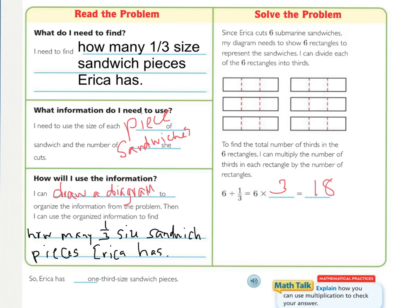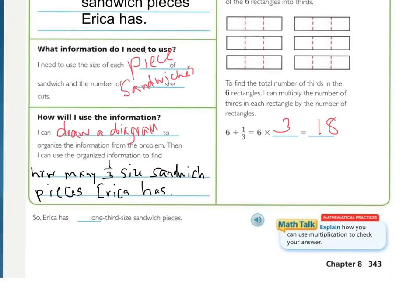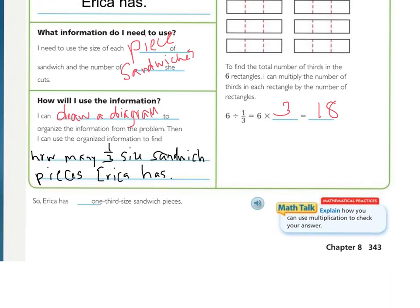And you can even double check that just by counting. One, two, three, four, five, six, all the way up to 18. So looking right down here, Erika has 18 one-third size sandwich pieces.